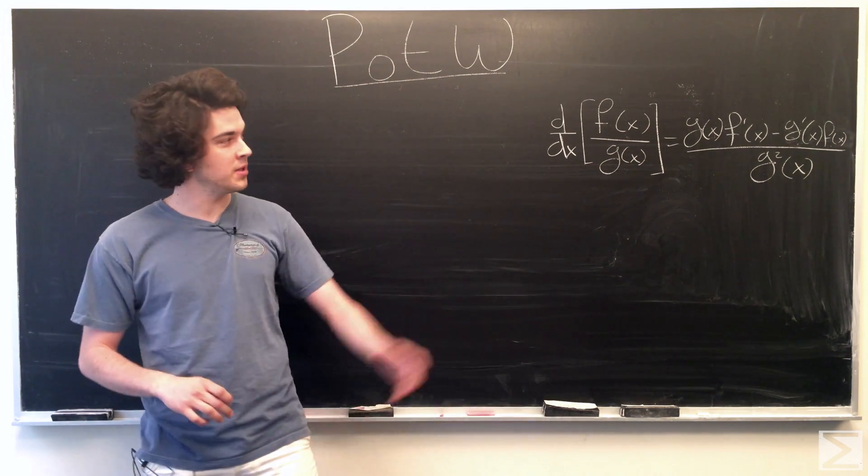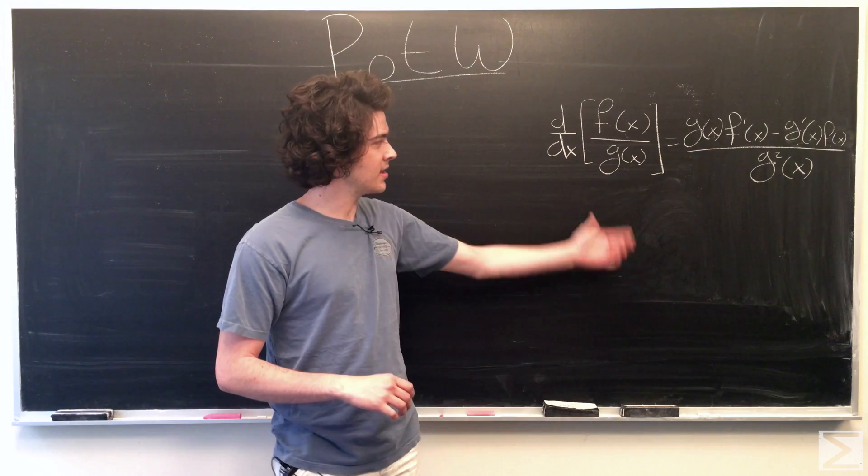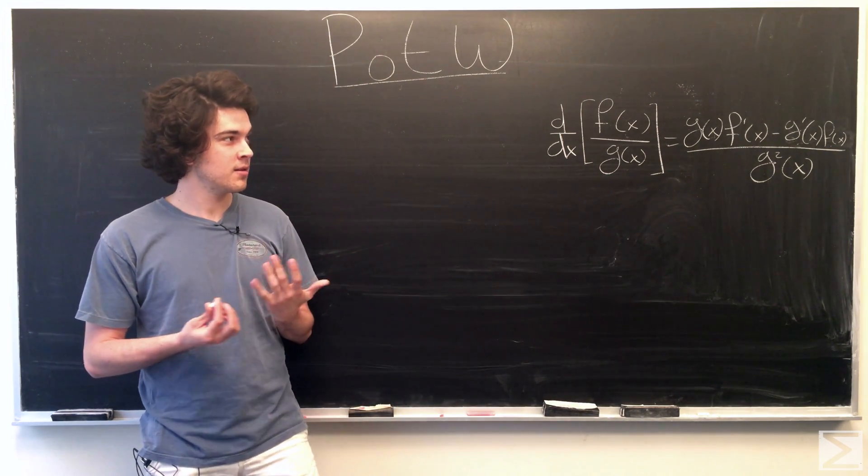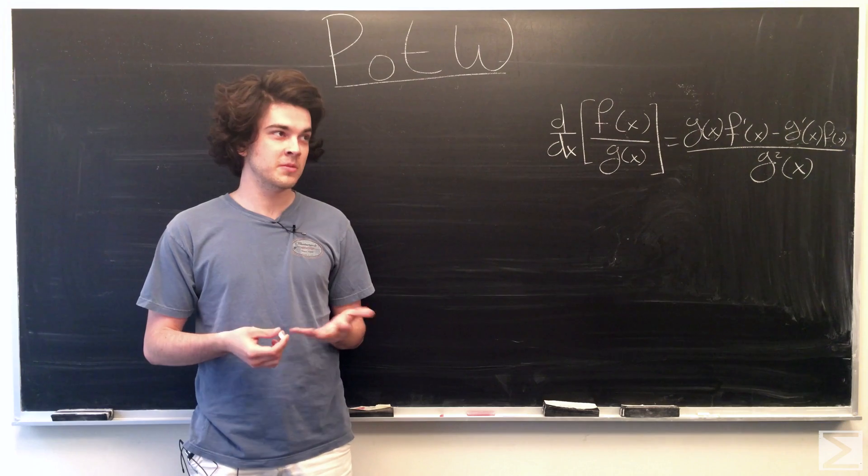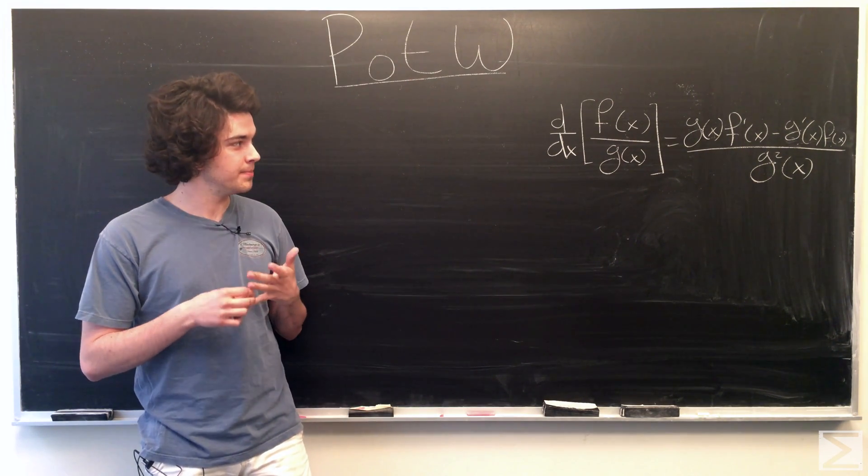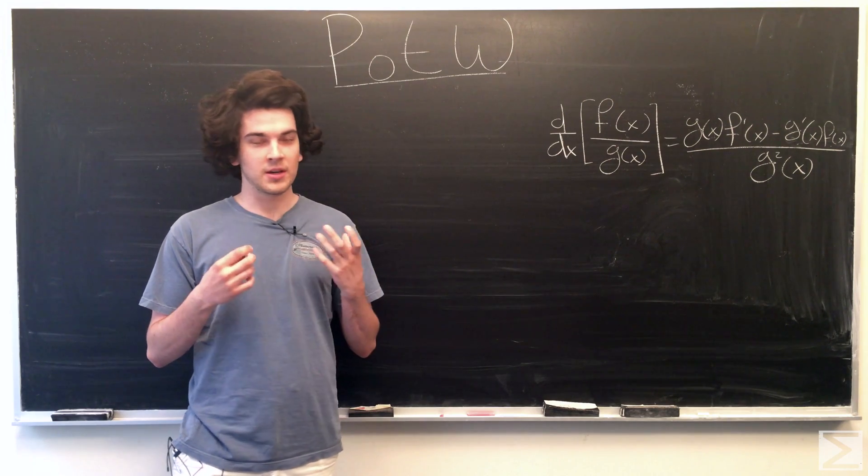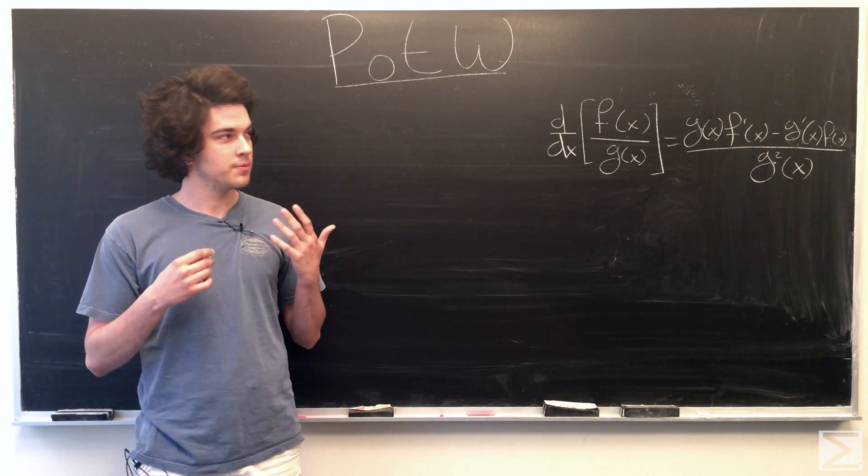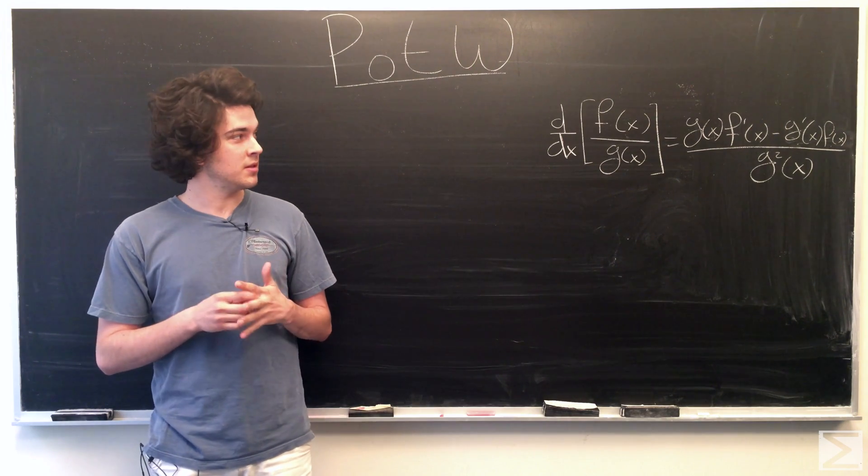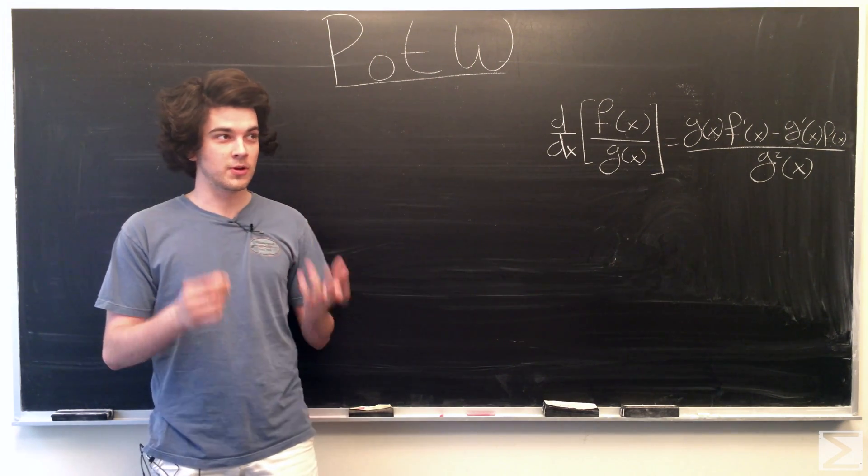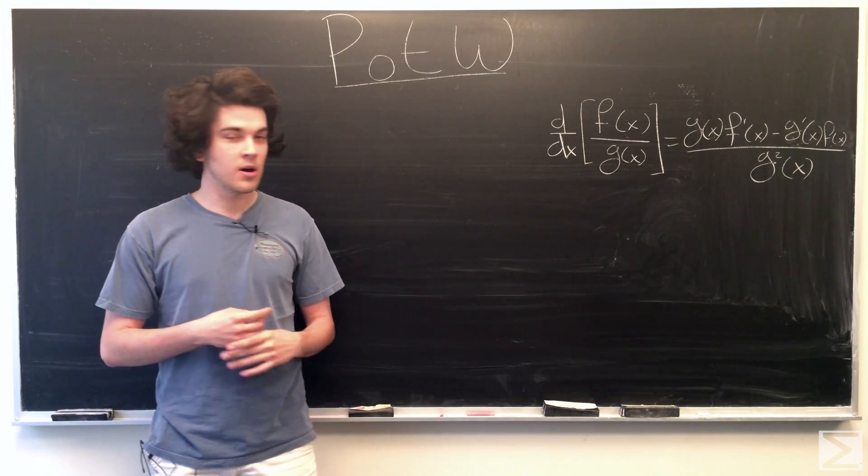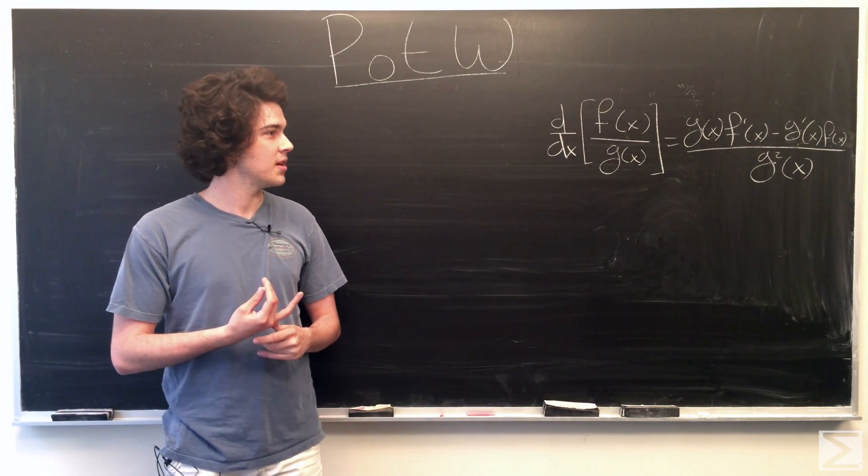So, the comment was, could we make an anti-differentiation rule based on the quotient rule? And we can, but the problem is, when you compare that to the regular rule for integration by parts, which is the anti-differentiation rule for the product rule, then this kind of becomes almost obsolete in most cases.